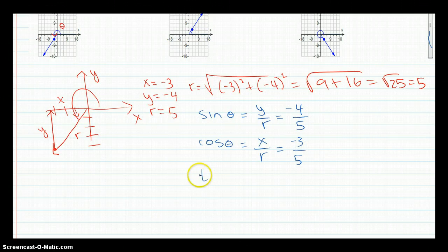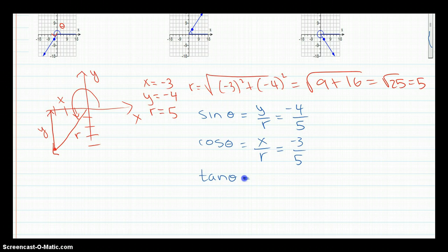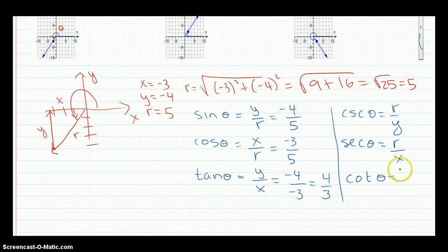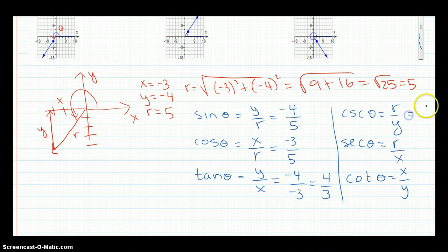And then you can also find tangent, which is y over x, so negative 4 over negative 3. By the way, two negatives is a positive. And then you can find the same for cosecant, secant, and cotangent. So we know that this would be negative 5 over 4.